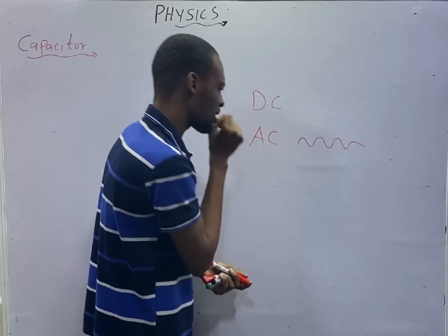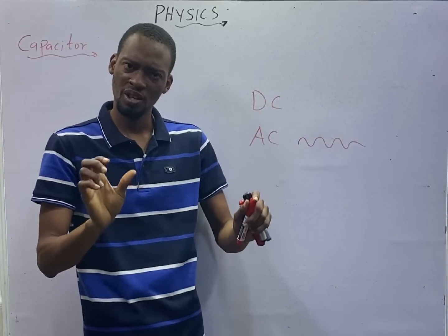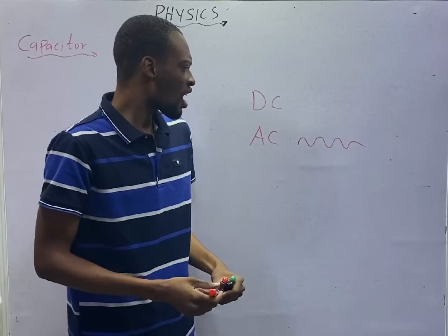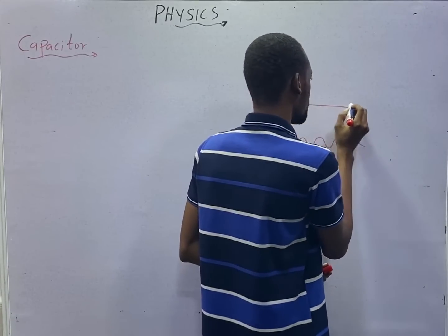Alternating current cannot be stored. You cannot store AC. However, you can store direct current.